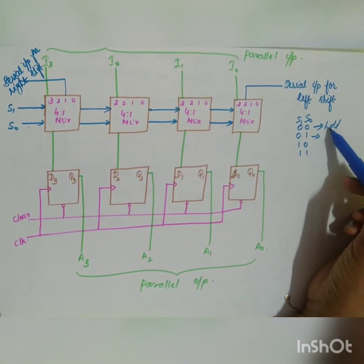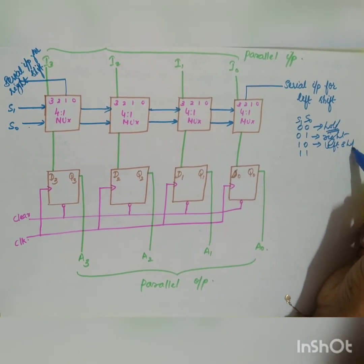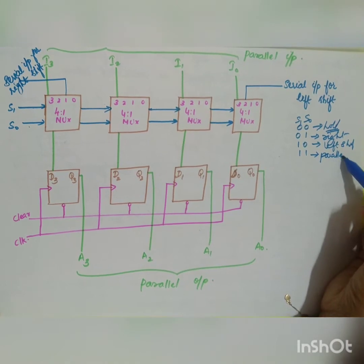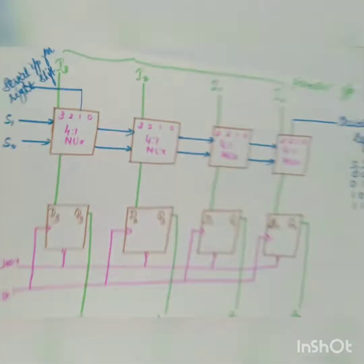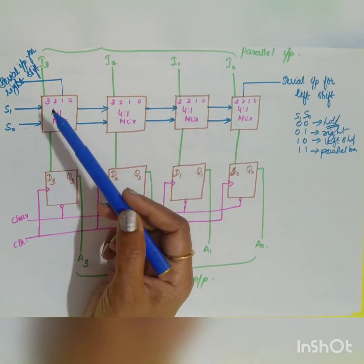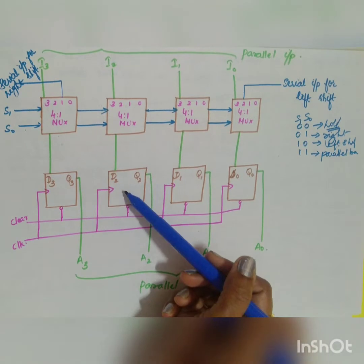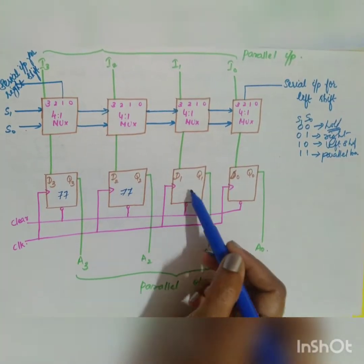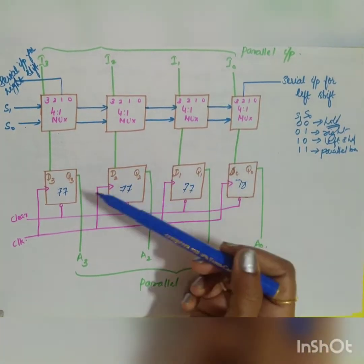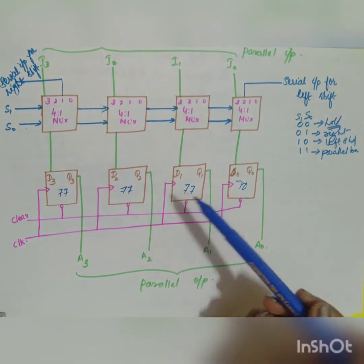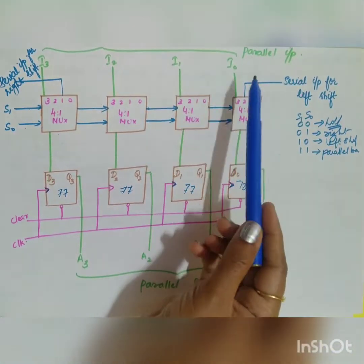These are the different operations as given in the problem. The output of each multiplexer is connected to a D flip-flop: D3, D2, D1, and D0. Each flip-flop has a clear signal for initially clearing the circuit values, and a clock signal. The clock signal is positive edge-triggered, as indicated by the absence of a bubble.